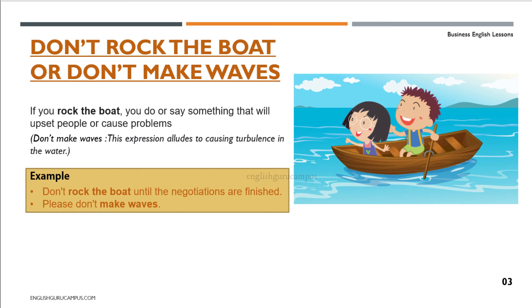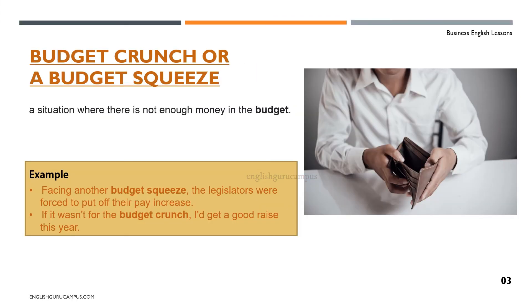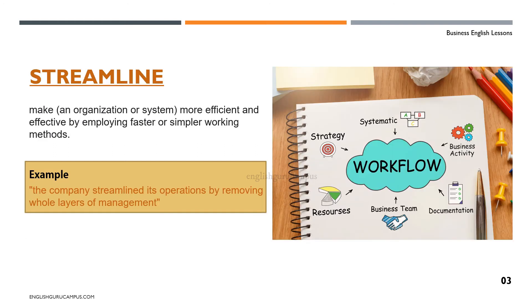Unfortunately, your company is having a budget crunch or a budget squeeze. That means there's not enough money to do everything that is planned. So the company needs to streamline its operations. Streamline means to make more efficient, usually by simplifying things.